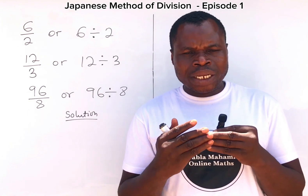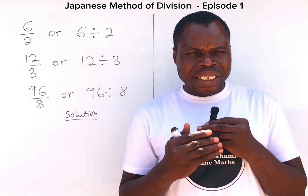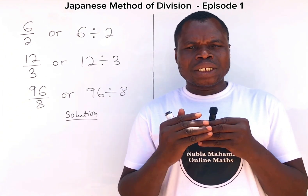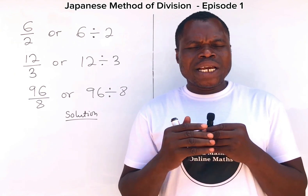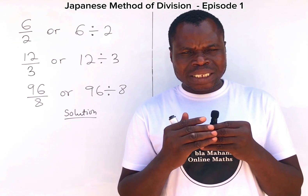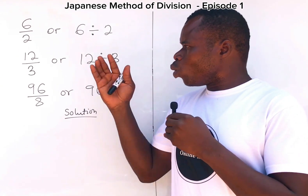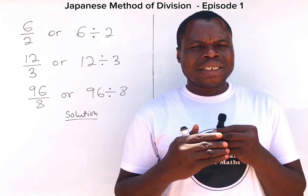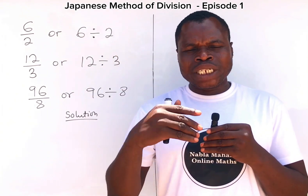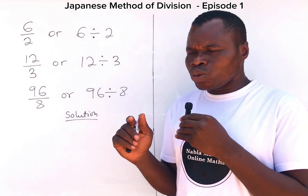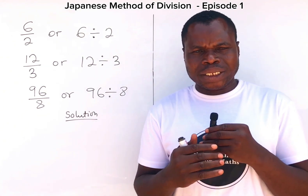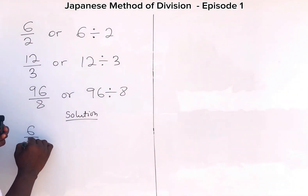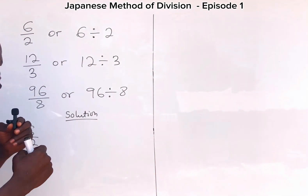The method is called the Japanese method of division. I have three examples on the board to illustrate this method. The concept of today is how to divide any number by a single digit. The denominator is a single digit — the numerator can be a single digit, double digit, or even a bigger number like four or five digits — but the concept we are learning is when the denominator is a single digit. The first example is six divided by two.